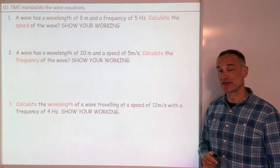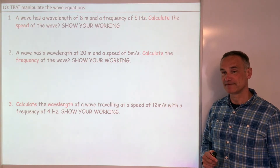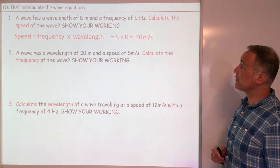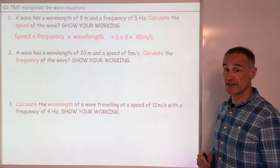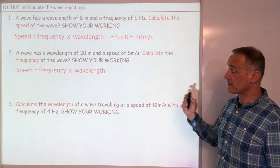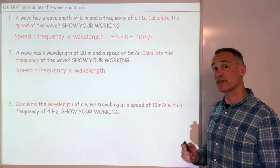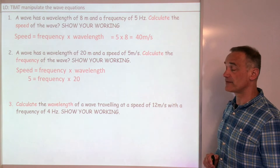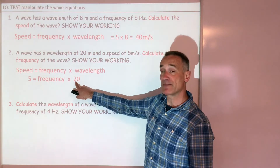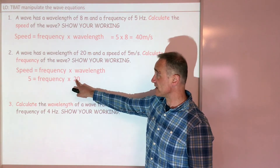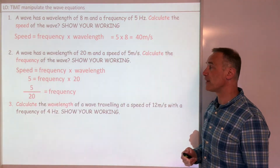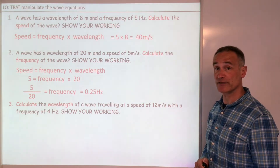Pause the video and have a go at these three questions. The first one: speed is frequency times wavelength — 5 times 8 is 40 metres per second. The second one: I'll quote the equation, put the values in. I want frequency to be the subject. It's being multiplied by 20, so do the opposite and divide. I get 5 divided by 20, which equals 0.25 Hz.